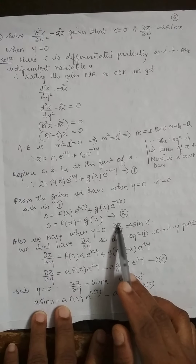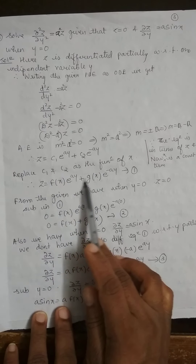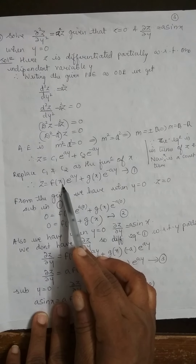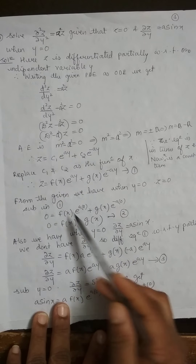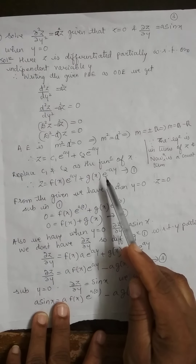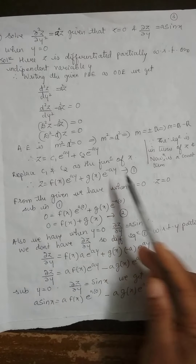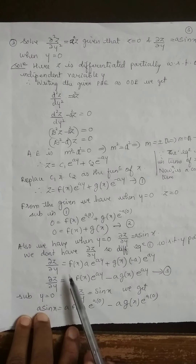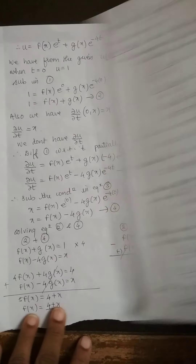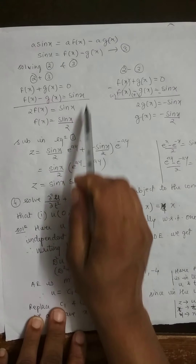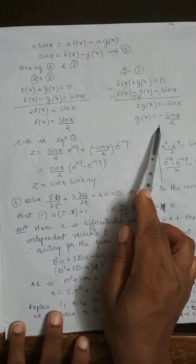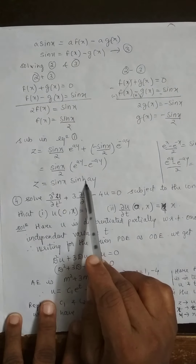For the second condition, ∂z/∂y = a·sin(x) when y = 0. Differentiating equation 1 with respect to y: ∂z/∂y = f(x)·a·eᵃʸ + g(x)·(−a)·e⁻ᵃʸ. Substituting, and taking a common (so a cancels with a·sin(x)), we get two expressions. Solving them by adding and subtracting, we find f(x) and g(x). Substituting back into equation 1 gives the final solution.